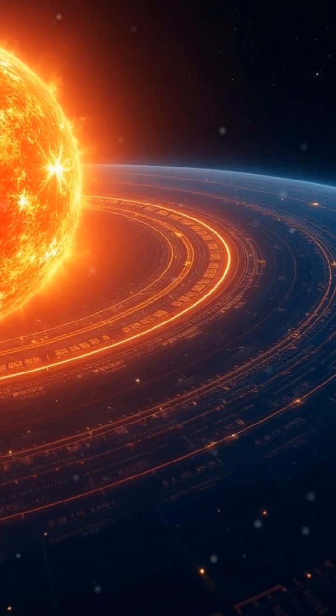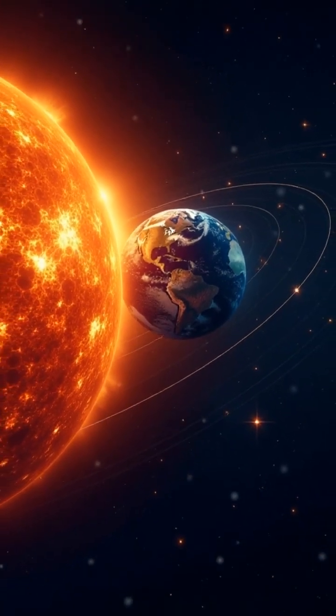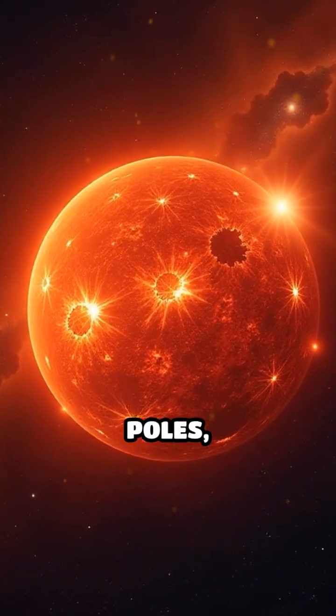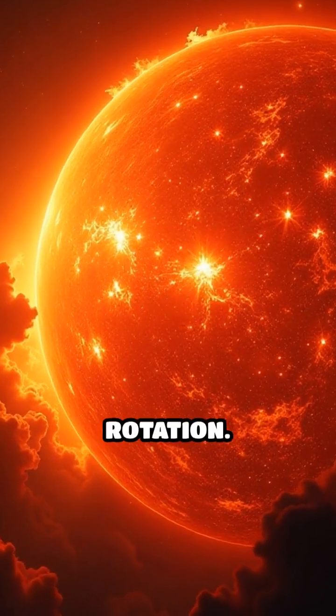It takes approximately 27 Earth days for a point on the Sun's equator to make one complete rotation. However, as you move toward the poles, the rotation slows down significantly. This phenomenon is known as differential rotation.